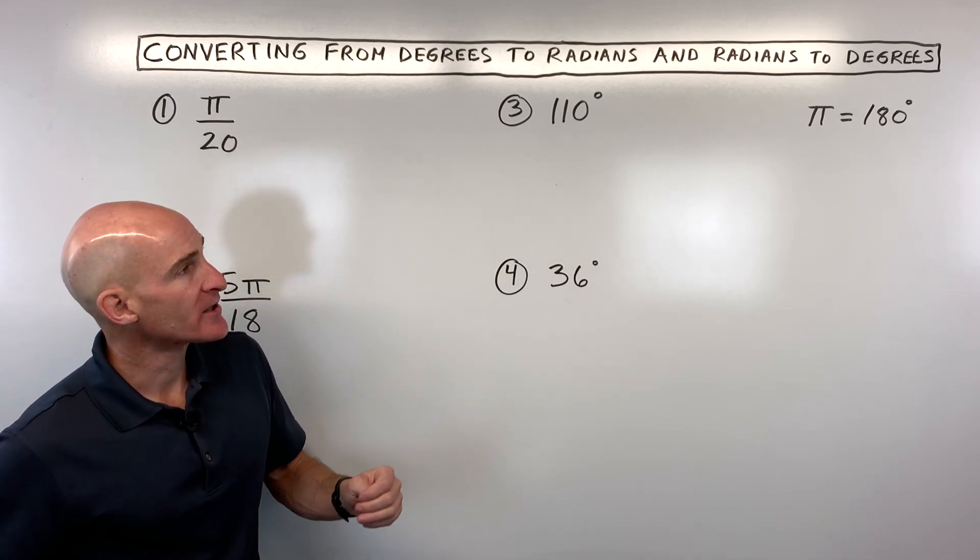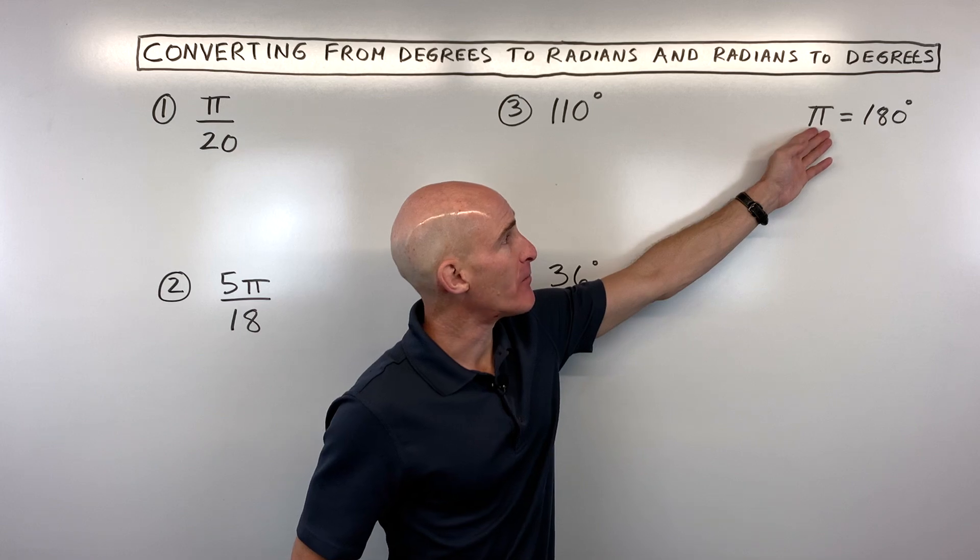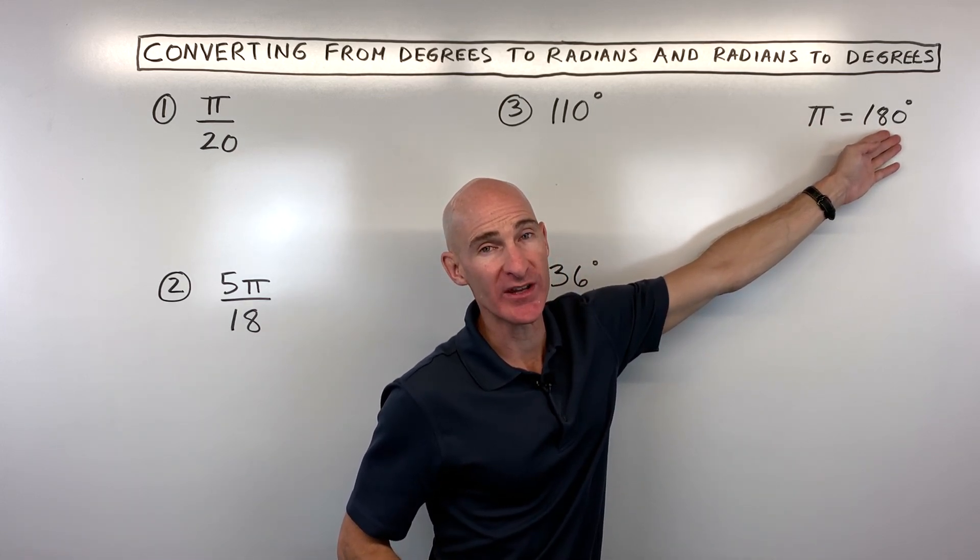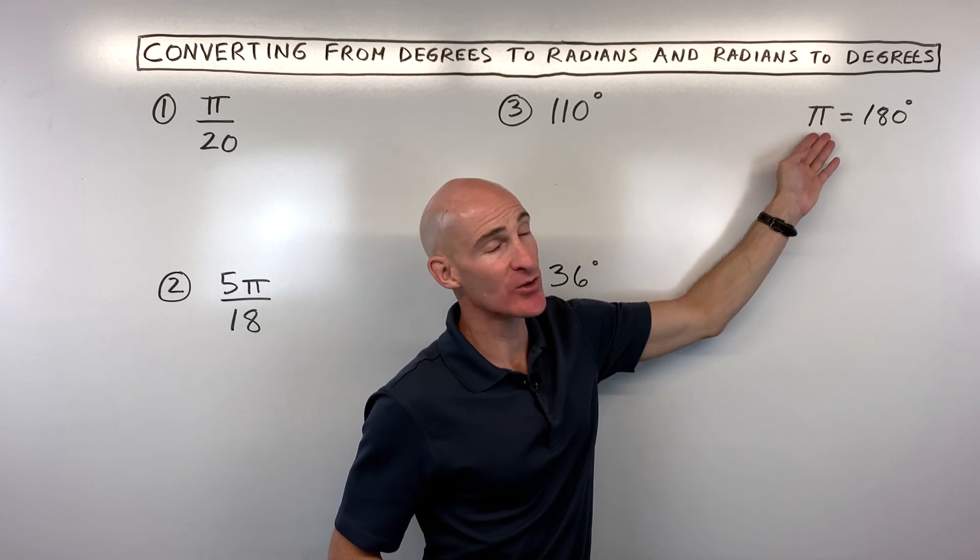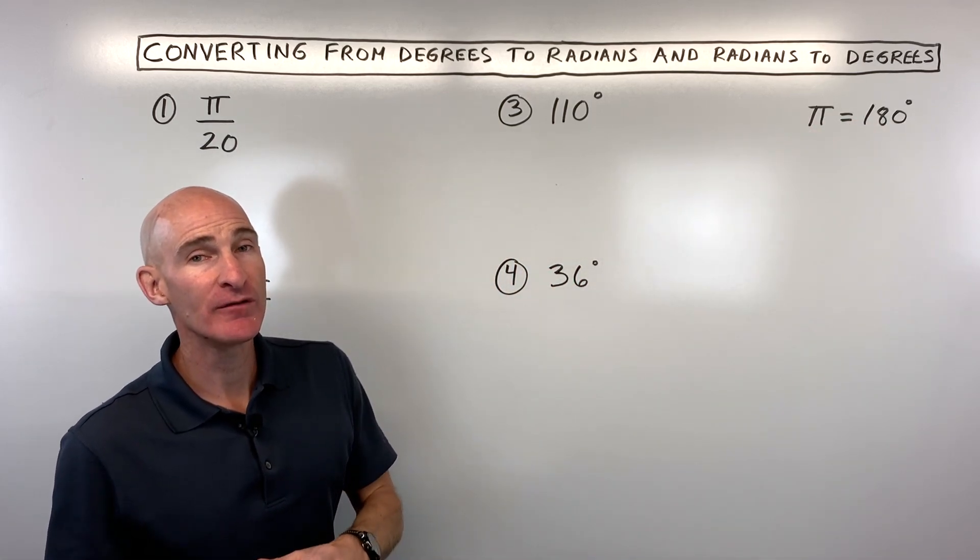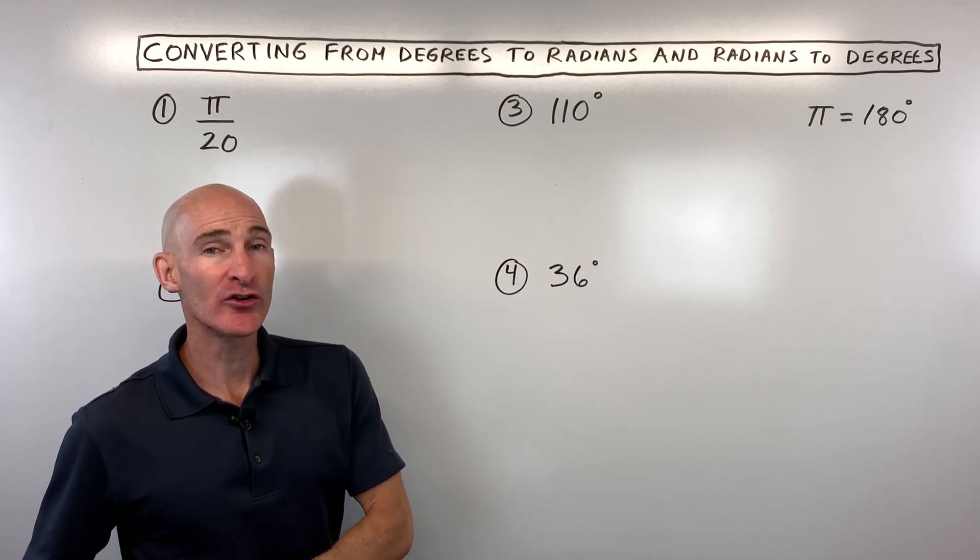So the first thing that you want to know and to memorize is that pi radians is equal to 180 degrees, or you could say 180 degrees is equal to pi radians. They're equivalent. And so we're going to use that fact to convert from one unit measure to another unit measure.